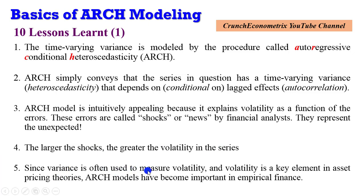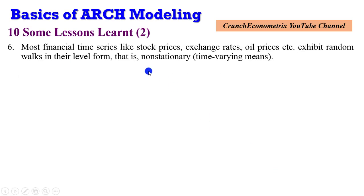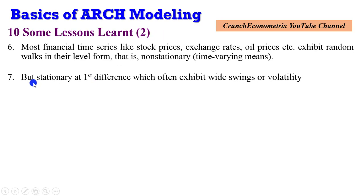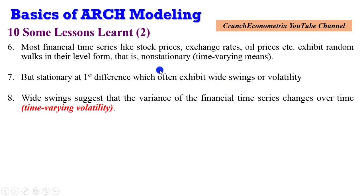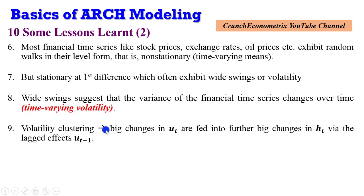Since variance is often used to measure volatility, and volatility is a key element in asset pricing theories, ARCH models have become important in empirical finance. Most financial time series — like stock prices, exchange rates, oil prices, and so on — exhibit random walks in their level form, that is, they are non-stationary and exhibit time-varying means. But these series can become stationary at first difference, and they often exhibit wide swings or volatility, suggesting the variance of the financial series changes over time. Volatility clustering shows that big changes in UT are fed into further big changes in HT via the lagged effects of UT-1.